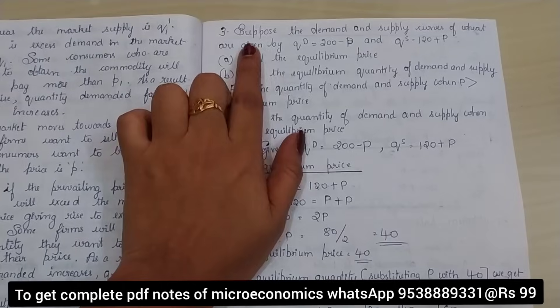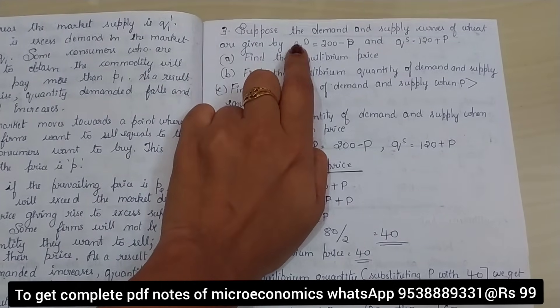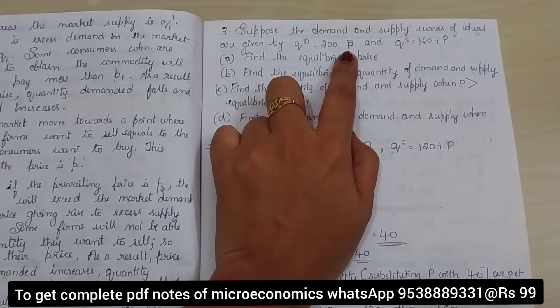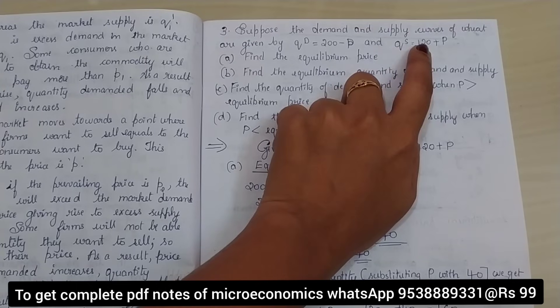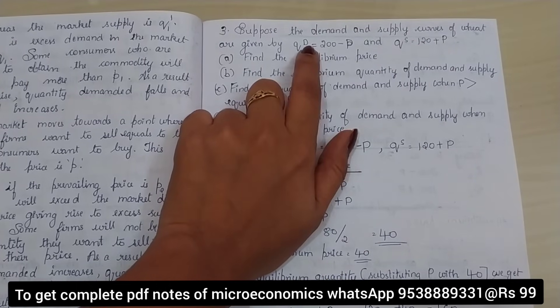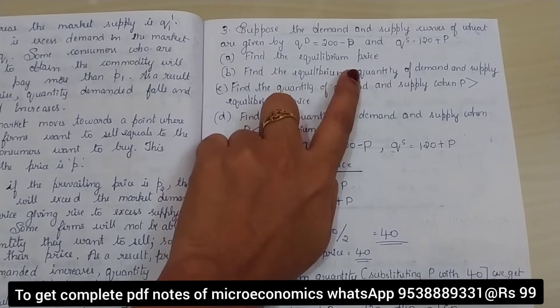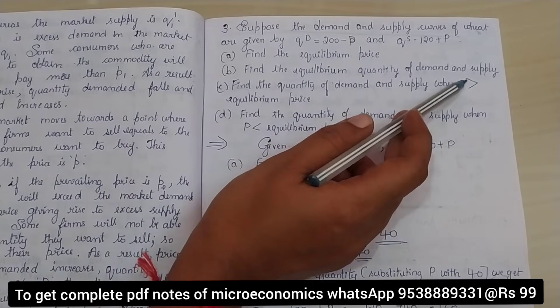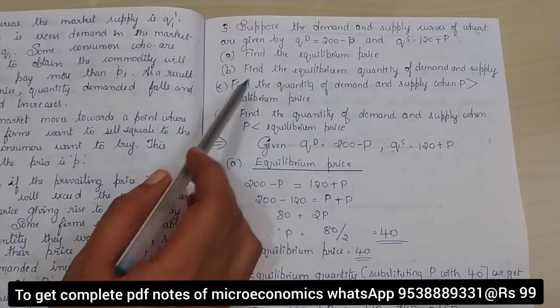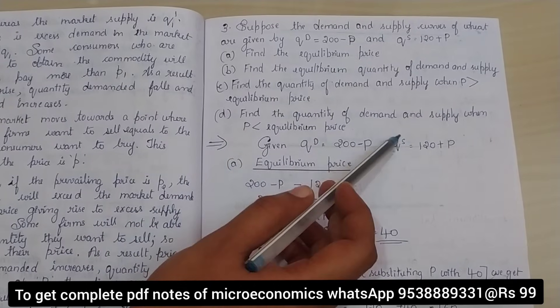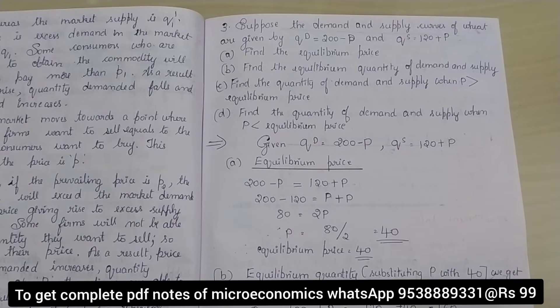So we shall read what is the question. Suppose the demand and supply curves of wheat are given by QD is equal to 200 minus P, where P is the price, and QS is equal to 120 plus P. This is the supply equation. Now, they have told us to find the equilibrium price, then find the equilibrium quantity of demand and supply, find the quantity of demand and supply when price is greater than equilibrium price, and find the quantity when price is less than equilibrium price. So totally we have 4 questions to solve.